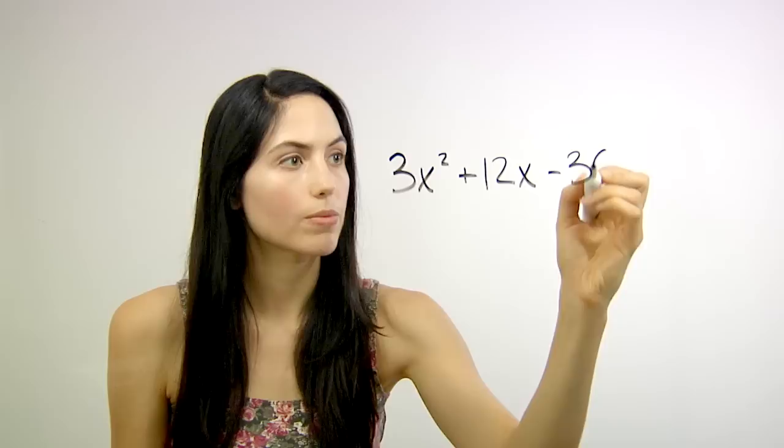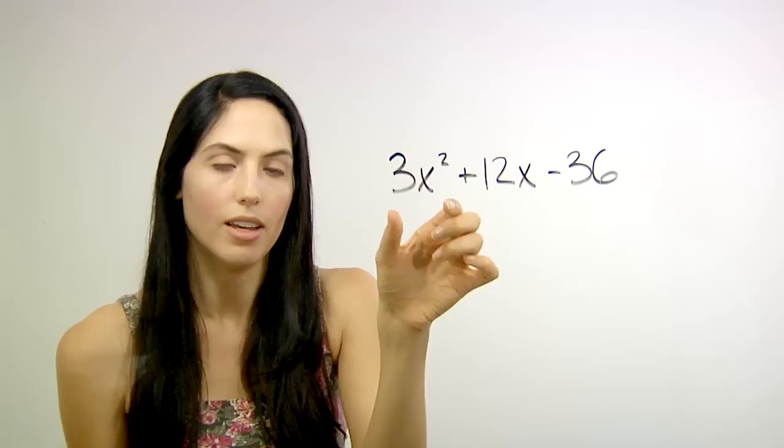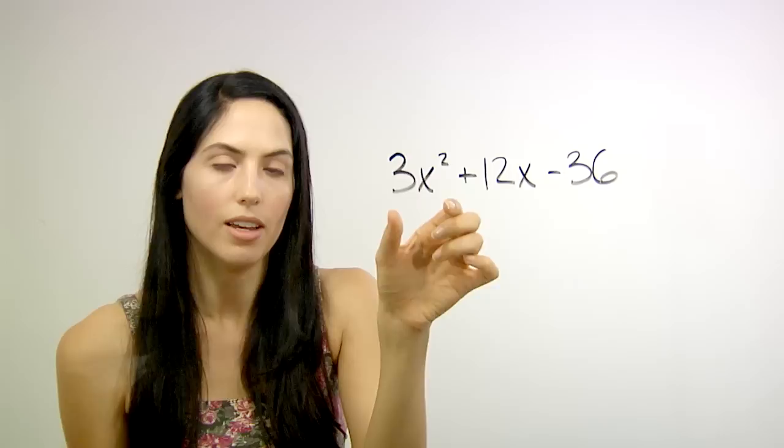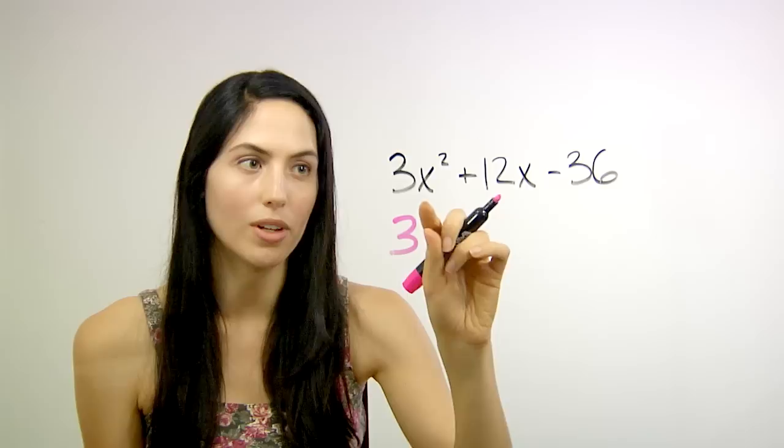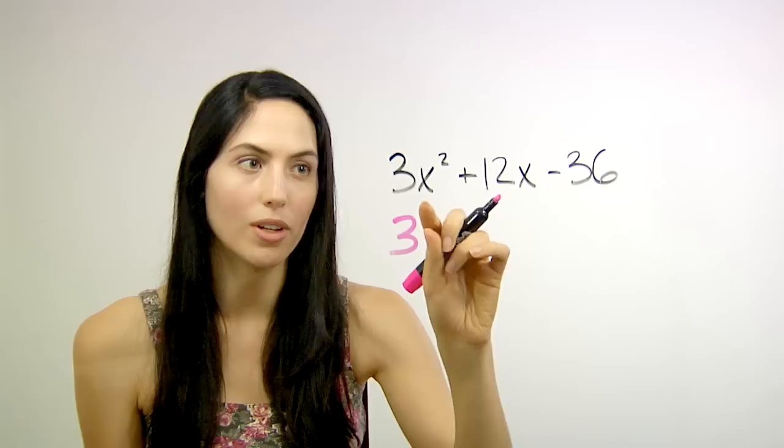Say you're given a quadratic that doesn't start with x squared, that actually has a term like 3x squared or 2x squared in the beginning. First thing to do is check to see if an overall number will factor out front. In this case, for instance, you have a 3 that can go into every one of the three terms.